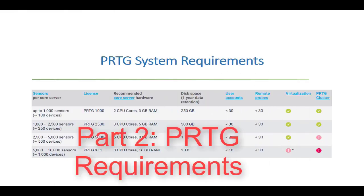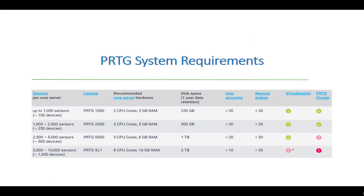It's recommended that you run the PRTG core server and all remote probes directly on 64-bit PC or server hardware running Windows Server 2019, Windows 10, or Windows Server 2012. .NET Framework 4.7.2 or later must be installed on your system. There are many parameters that influence the performance and stability of PRTG, but for the vast majority of users the following hardware recommendations work fine.